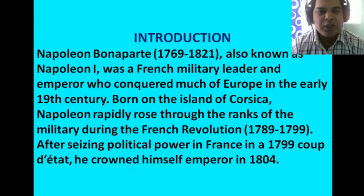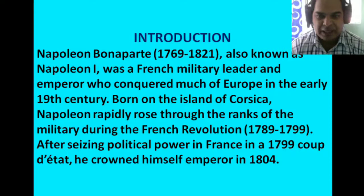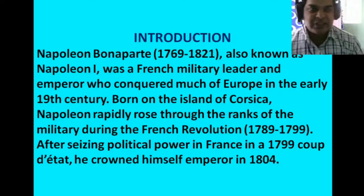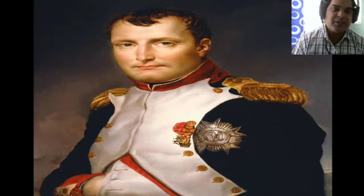Born on the island of Corsica, Napoleon rapidly rose through the ranks of the military during the French Revolution. After seizing political power in France in 1799 — that is, the coup d'état — he crowned himself emperor in 1804. Coup d'état means forcibly taking over the government.